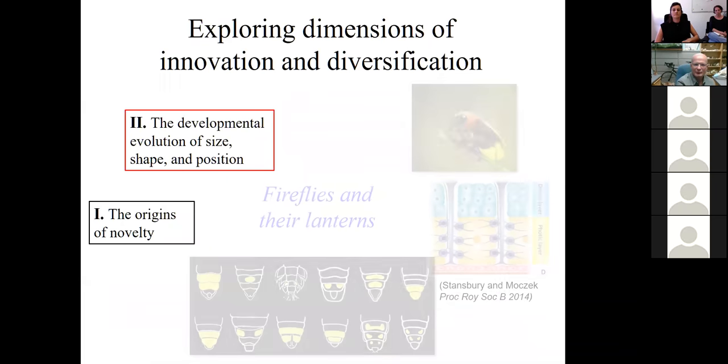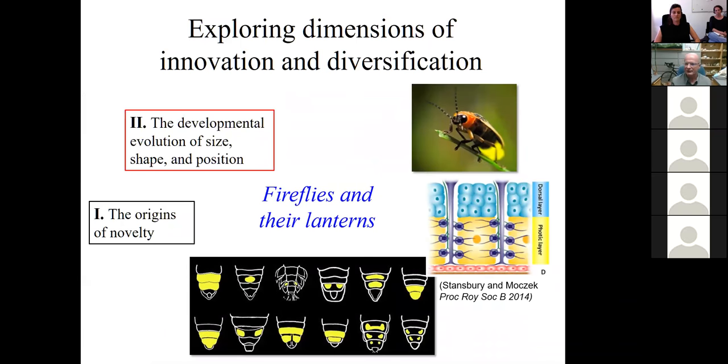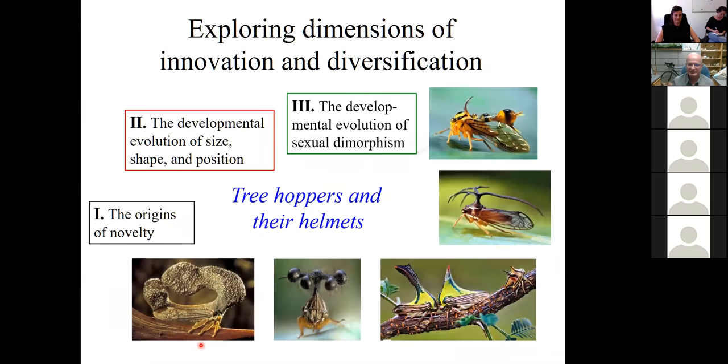And we enlist in that attack a diverse cast of insect model systems. So for instance, we have done work on fireflies and their light producing organs, the lantern, to explore the very origin of novel complex traits, but also the developmental evolution of size, shape, and positioning. We've done some work on tree hoppers and their extraordinary helmets, where we also add a research program interested in the developmental evolution of sex differences.